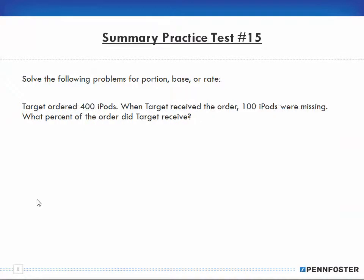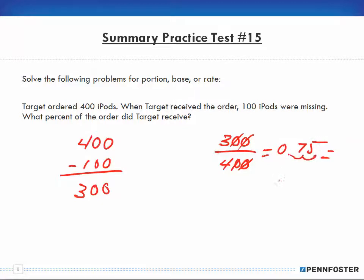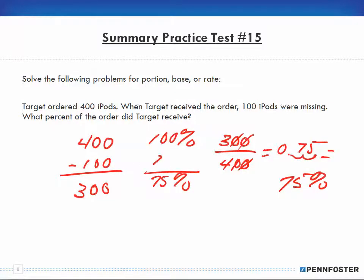Number 15: Target ordered 400 iPods. When Target received the order, 100 iPods were missing, so 300 showed up. What percent of the order did Target receive? If they received 300 out of 400, I divide 300 by 400. That equals 0.75, which is 75%. So the 400 is 100%, the 300 received is 75%, and the 100 missing is 25%.